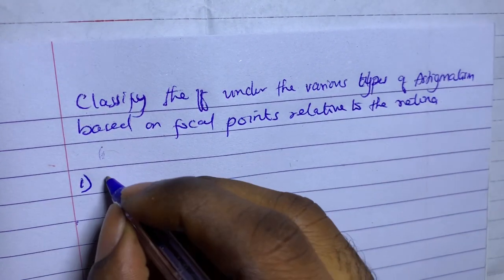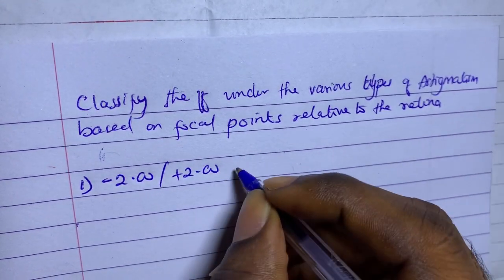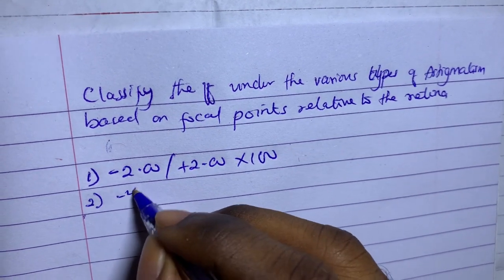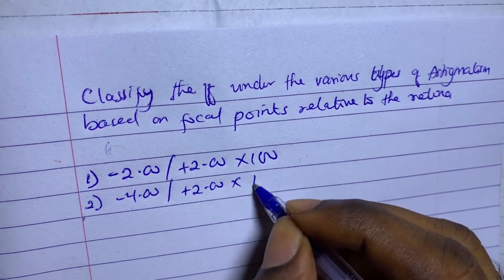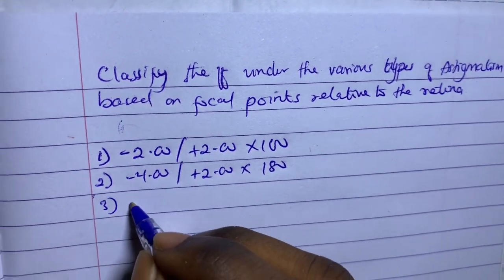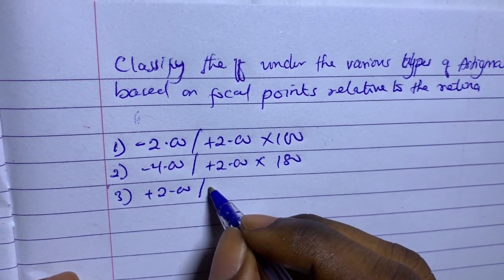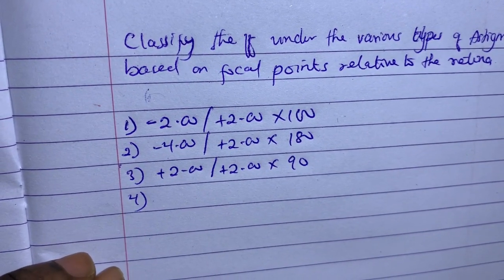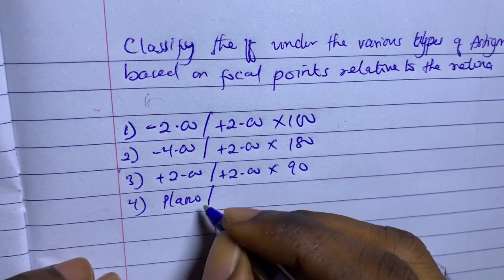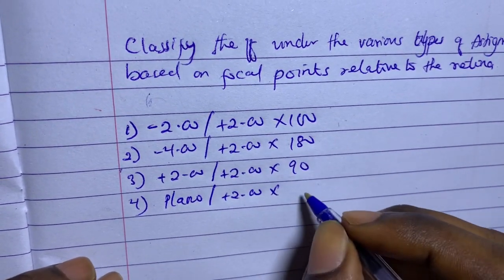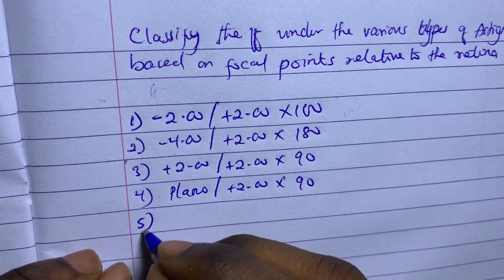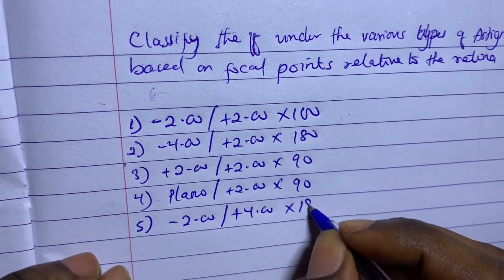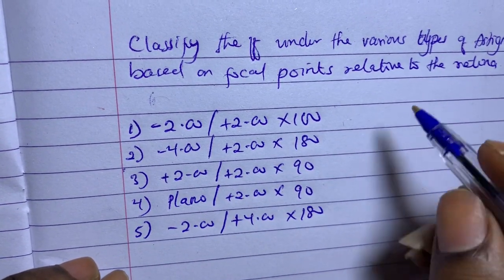The examples are: one) minus two combined with plus two axis 100; two) minus four combined with plus two axis 180; three) plus two combined with plus two axis 90; four) plano combined with plus two axis 90; five) minus two combined with plus four axis 180. We are to determine whether each is compound hyperopic, mixed, compound myopic, simple, and so on.